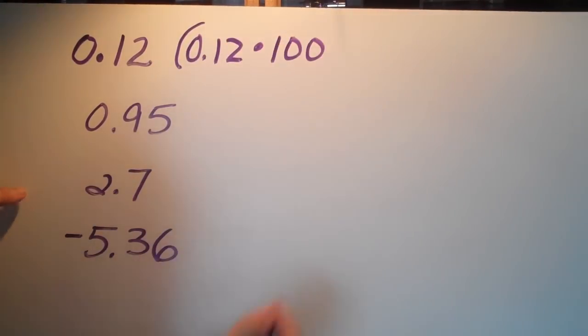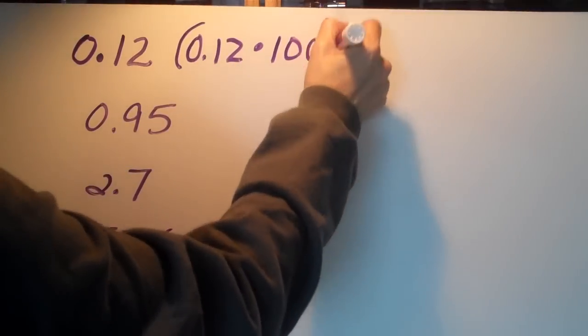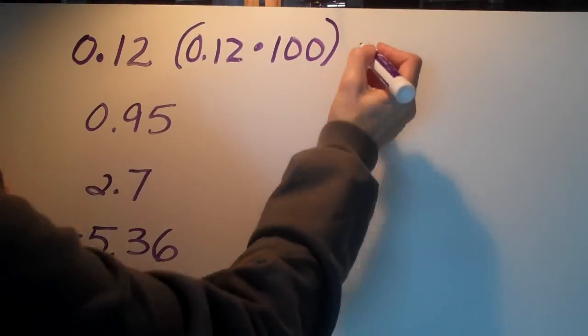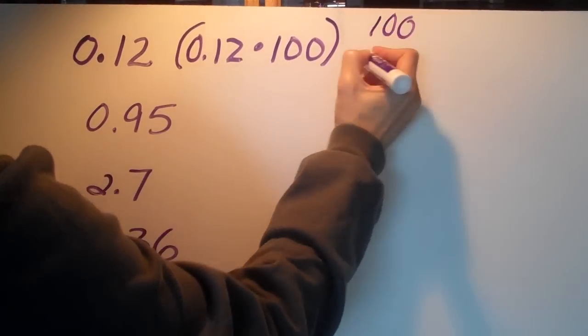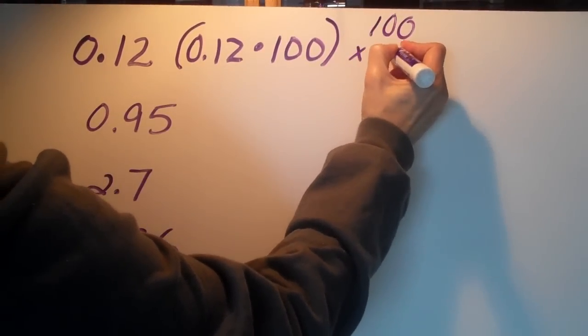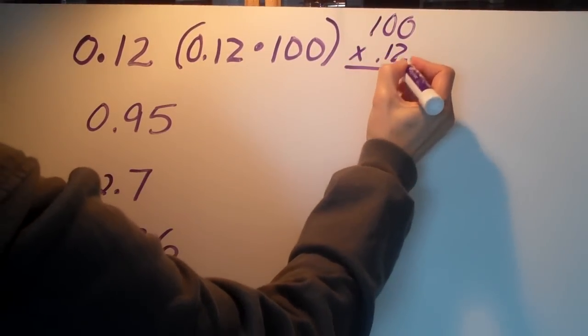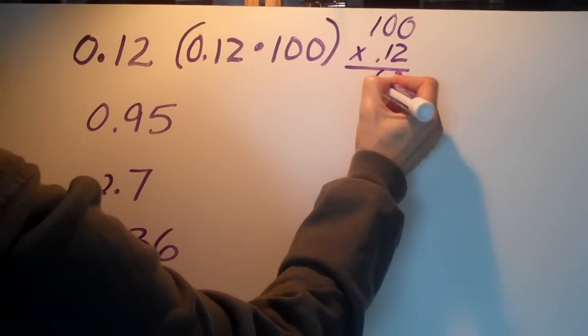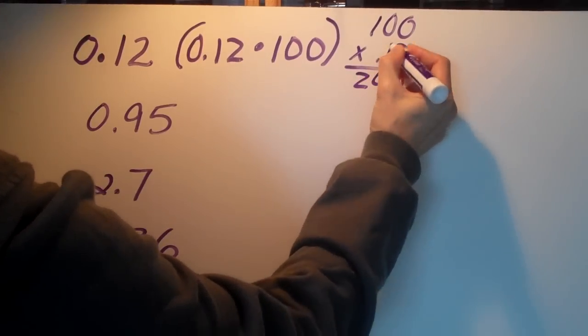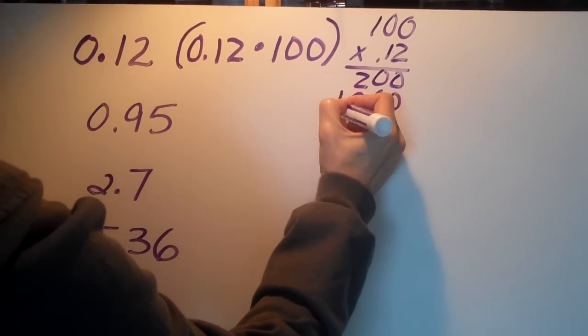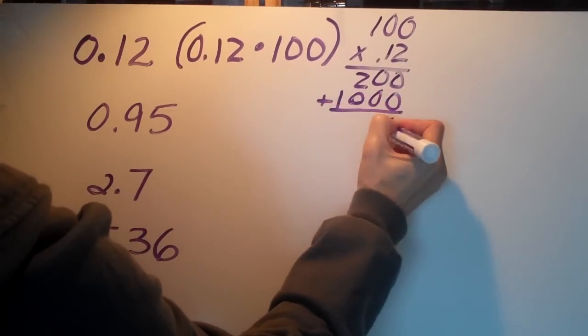And if you were to do that the long way, well we can do it the long way. It would be 100 times 0.12. And if we did the long multiplication problem, which really isn't that long, we would get, just add this up...